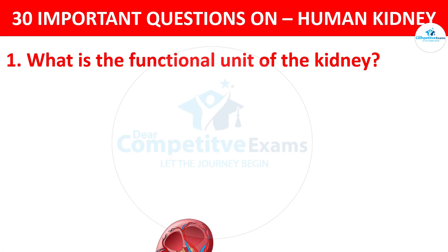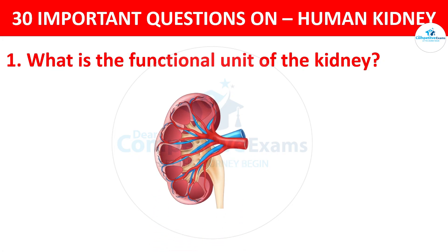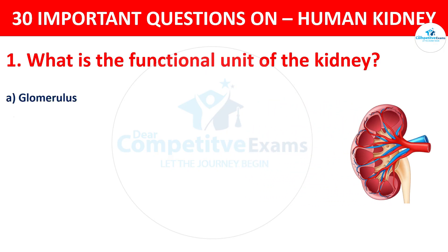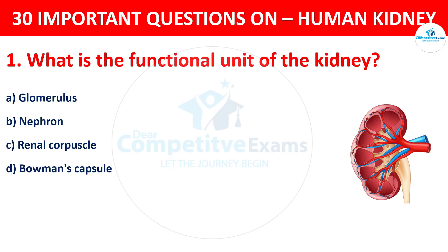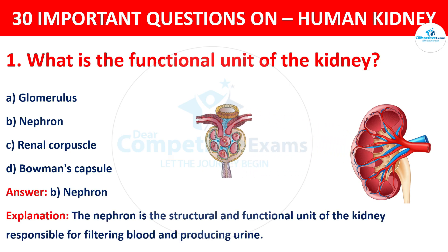What is the functional unit of the kidney? Your options are: Glomerulus, Nephron, Renal Corpuscle, or Bowman's Capsule. The correct answer is B, i.e. Nephron. The nephron is the structural and functional unit of the kidney responsible for filtering blood and producing urine.